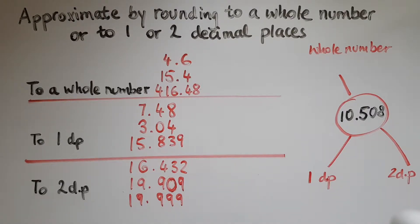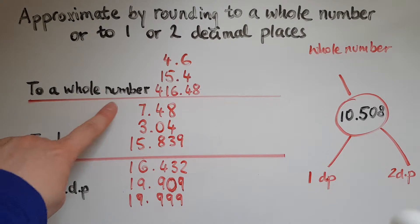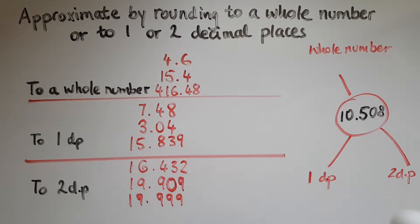And this is what we're going to be doing now. So we're going to round to a whole number, to one decimal place and to two decimal places. To round to a whole number means to have your answer as just a whole number. No decimal point and no decimal places.